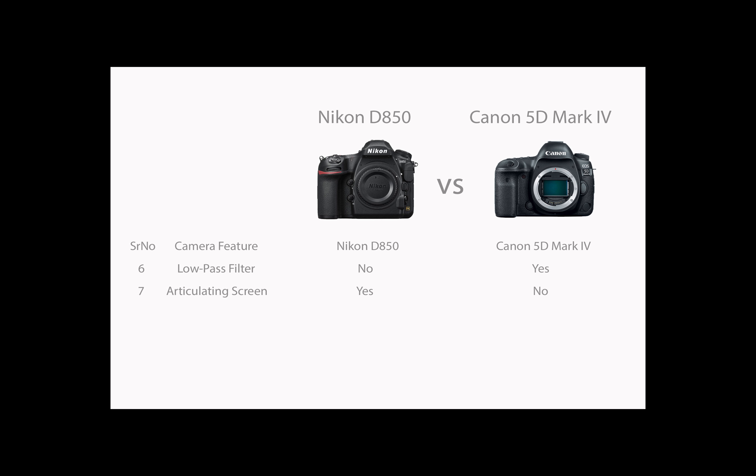Nikon D850 has an articulating screen, whereas Canon 5D Mark IV does not have an articulating screen. The articulating screen gives the photographer more flexibility to shoot in different shooting positions.